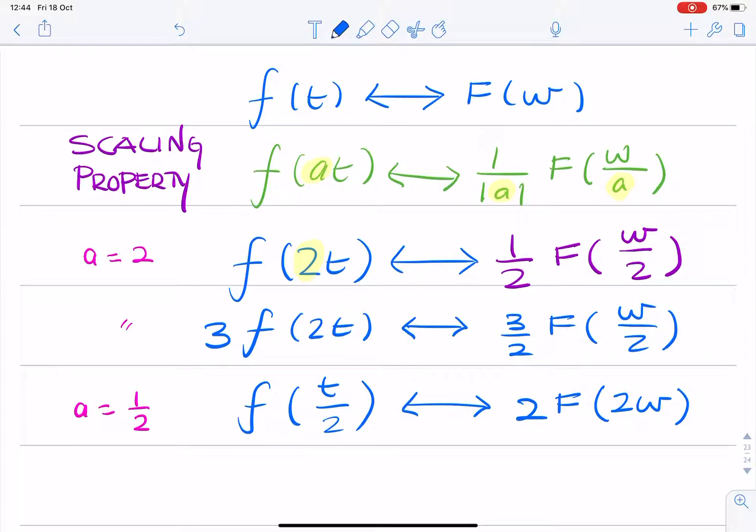And the next question is the same. You've got 3f of t over 2. So you'd have 3 multiplied by 2. It's 6F of 2 omega.